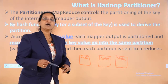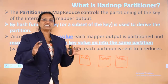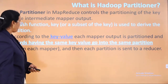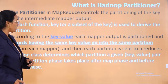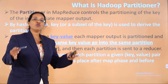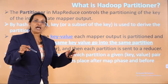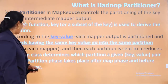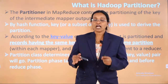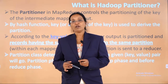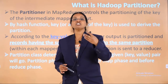By doing this, the reducer job will also be reduced, and we will have separate partitions based on the need. The partition class determines which partition a given key-value pair will go to. Partition phase takes place after the map phase and before the reduce phase — after the mapper job is done, partitioning happens, and those partitions are given to the reducer.